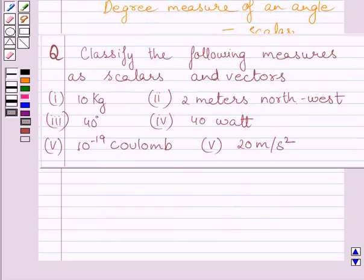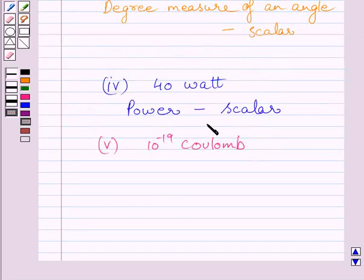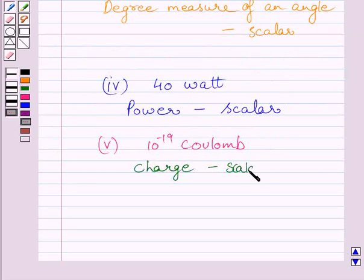The fifth part is 10 raised to the power minus 19 coulomb. Coulomb is a unit of charge, and charge is a scalar quantity. Charge has only magnitude and no direction, so it is a scalar quantity.